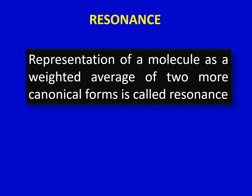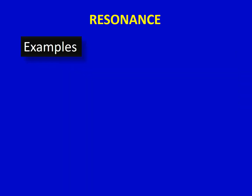We will try to explain the concept of resonance with the help of some examples. As a first example, we have 1,3-butadiene, which we have already discussed in another topic on delocalized chemical bonding — you can find the link to that video here.